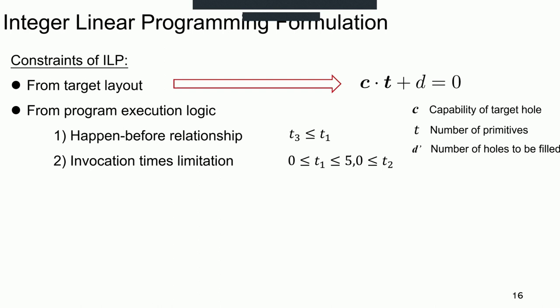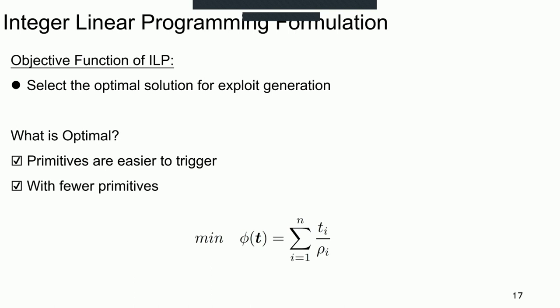Sometimes we might get multiple feasible solutions by solving the constraints. To facilitate the procedure of exploit generation, we define an objective function to output the optimal solution. The design is that the optimal solution tends to be easier to generate exploit when a solution contains less primitives, and they are more frequently triggered during the fuzzing.